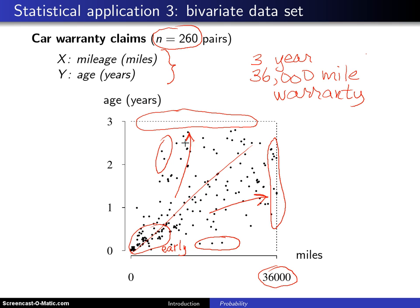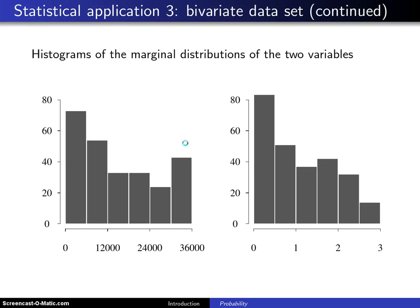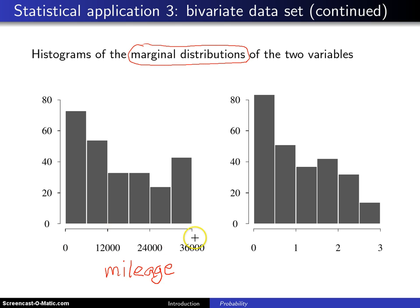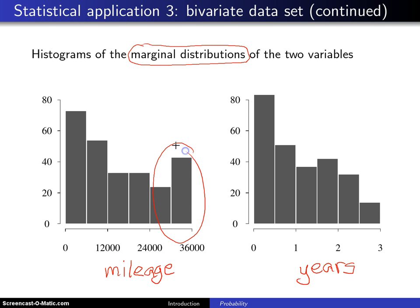When you bump into either the mileage wall or the time wall, the warranty is over. Now let's look at another way of looking at that. There is something known as the marginal distribution of the two variables. If we just look at mileage alone and draw a histogram of the mileage when the warranty claim occurred, and then just look at the time in years, you'll notice you get a spike out here at the end.